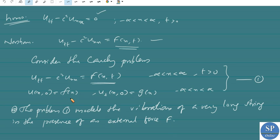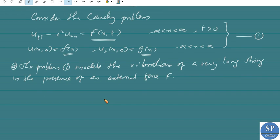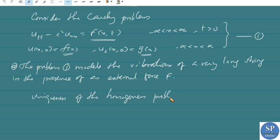As in the case of the homogeneous Cauchy problem, here also f and g are given functions. Here f represents the shape of the string at time t equal to 0, and g represents the vertical velocity of the string at time t equal to 0. As in every linear problem, here also the uniqueness of the homogeneous problem implies the uniqueness of the non-homogeneous problem.